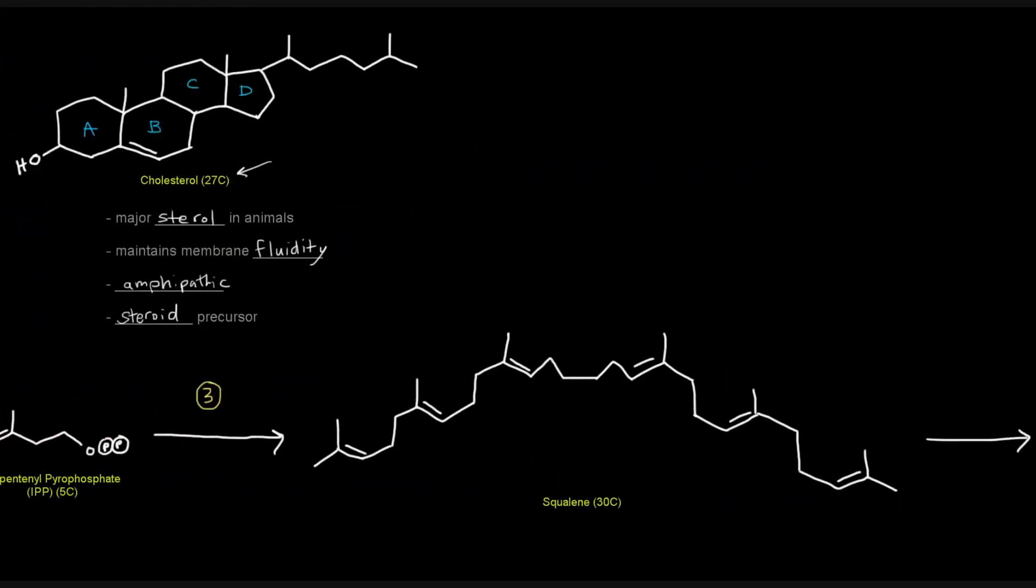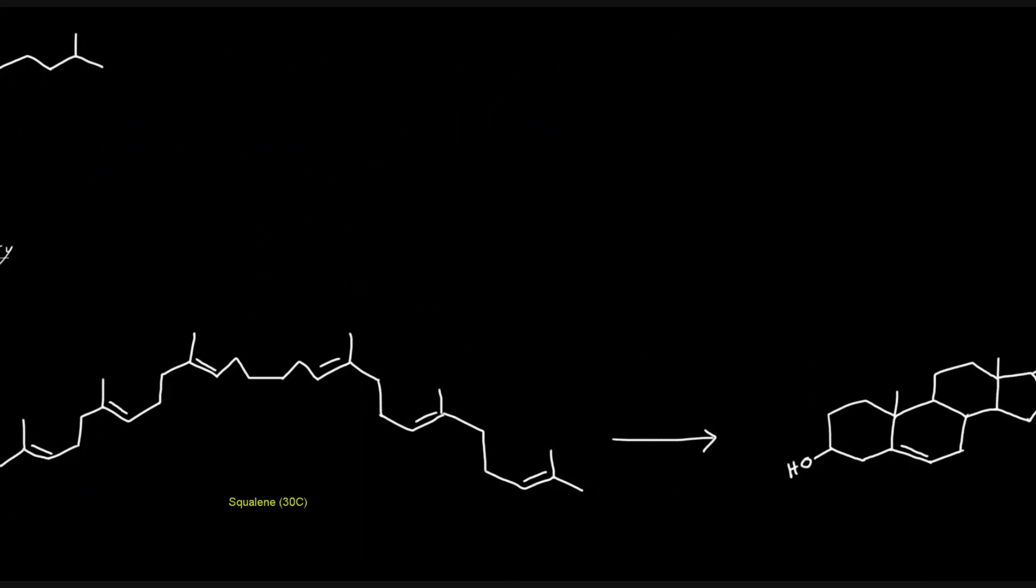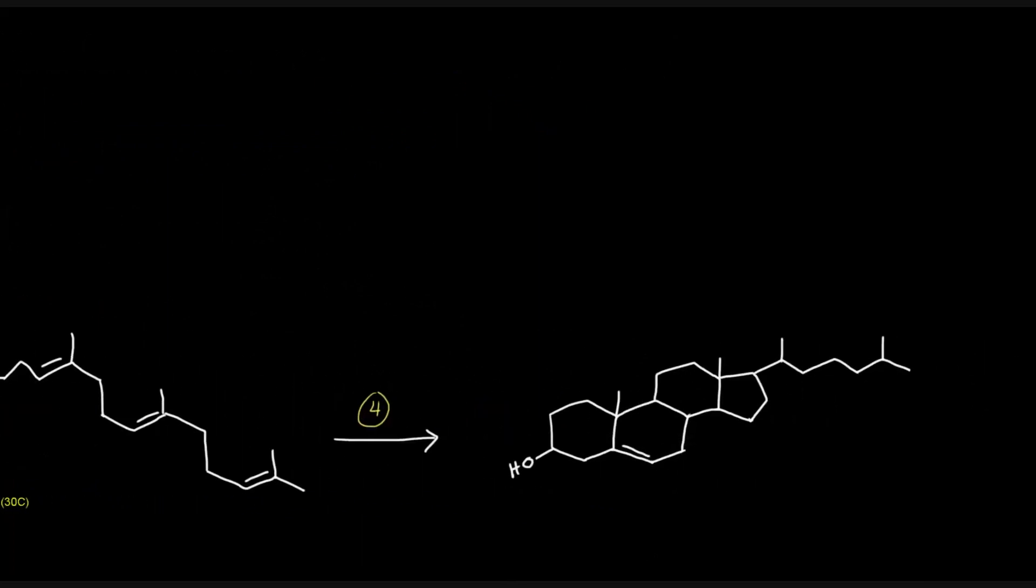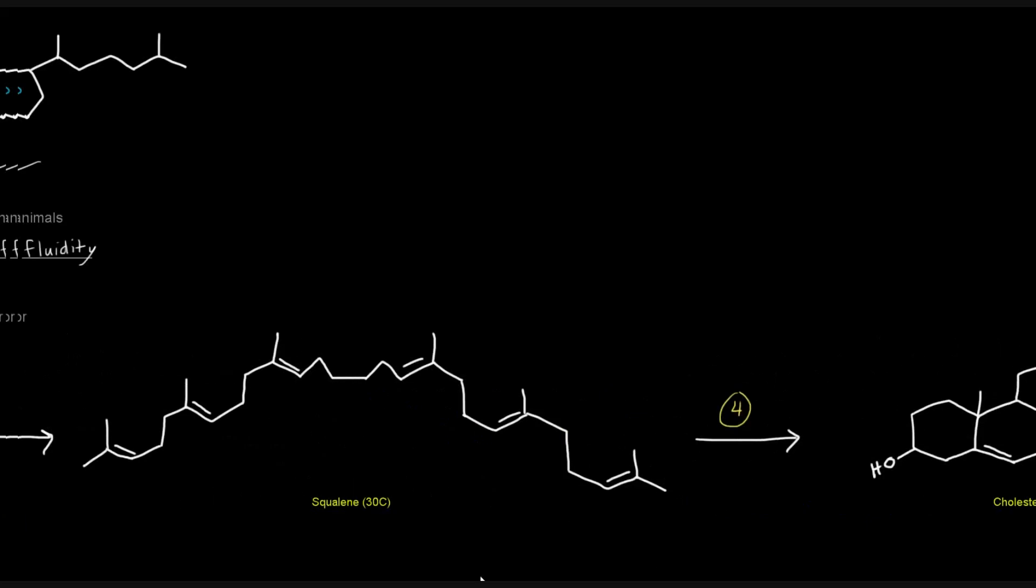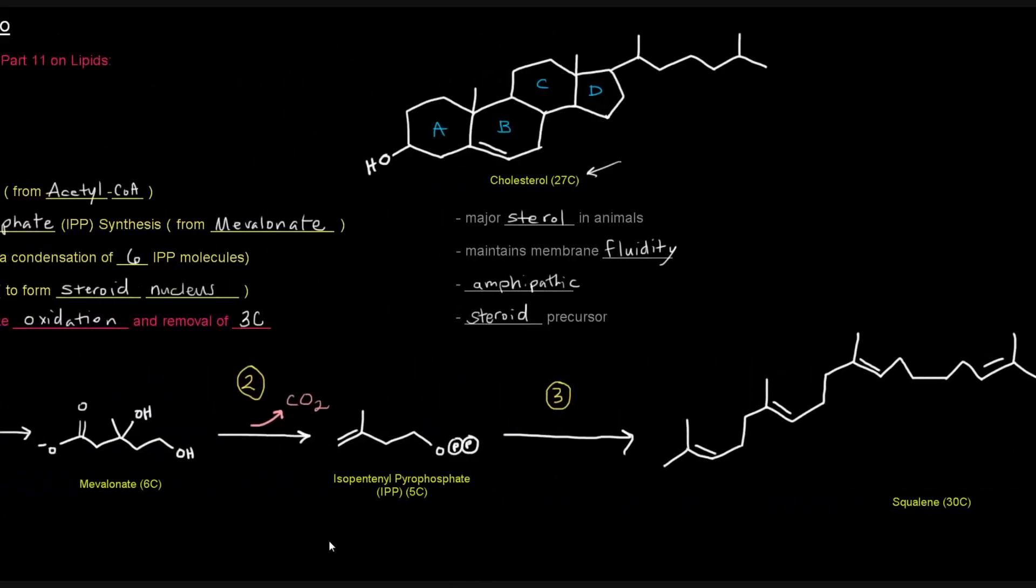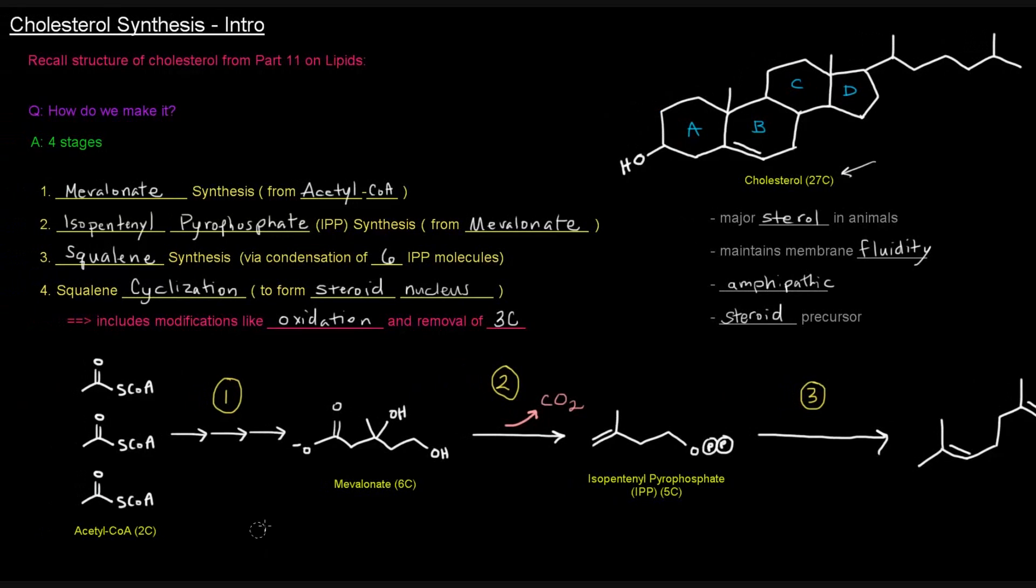So we're going to take this squalene with its 30 carbons, and in stage four, we're going to convert it into cholesterol, which looks like that. We've seen that already. So in that fourth stage, we're going to lose three carbons to give us this final product, cholesterol. So in the next few videos, we're going to be going over these four stages in a little bit more detail.